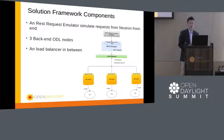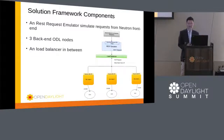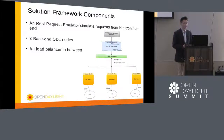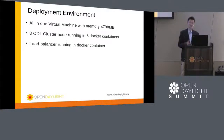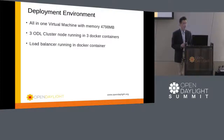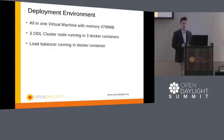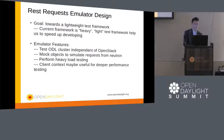Here is our solution framework — it basically has three components. One is the REST request emulator that simulates REST requests from neutron services to OpenDaylight. We have three OpenDaylight nodes to simulate clustering mode, and a load balancer in between. We deploy this in an all-in-one virtual machine with almost 5GB memory. Three OpenDaylight clusters run, each in a Docker container, and a load balancer runs in a Docker container as well.